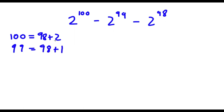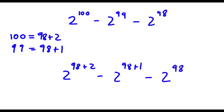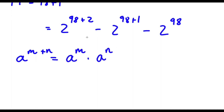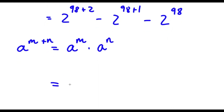So now if I place these in, I get 2 to the power of 98 plus 2 minus 2 to the power of 98 plus 1 minus 2 to the power of 98. If I have something in the form a to the power of m plus n, this equals a to the power of m times a to the power of n. So 2 to the power of 98 plus 2 equals 2 to the power of 98 times 2 to the power of 2.